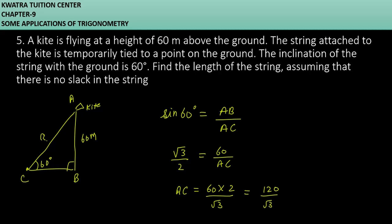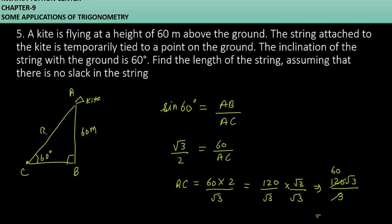And take the rationalization of this under root 3. And you will get 120 under root 3, and in denominator you will get 3. So you can cancel 120, this will be 60. So yes, your final answer to this is 60 under root 3 meters. This is the length of the string you have. This is the answer for 5th question.